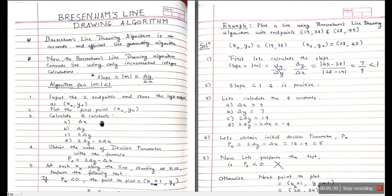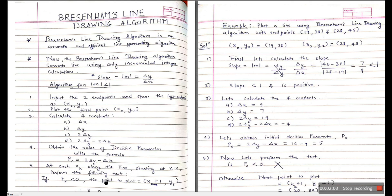We use delta x and delta y to find these values, and these four constants remain available throughout the calculations. The fourth step is to find the decision parameter. The decision parameter P0 has the formula 2 delta y minus delta x. We calculate the initial decision parameter P0, and for each xk along the line — that is, for every upcoming pixel position — we perform the following test.